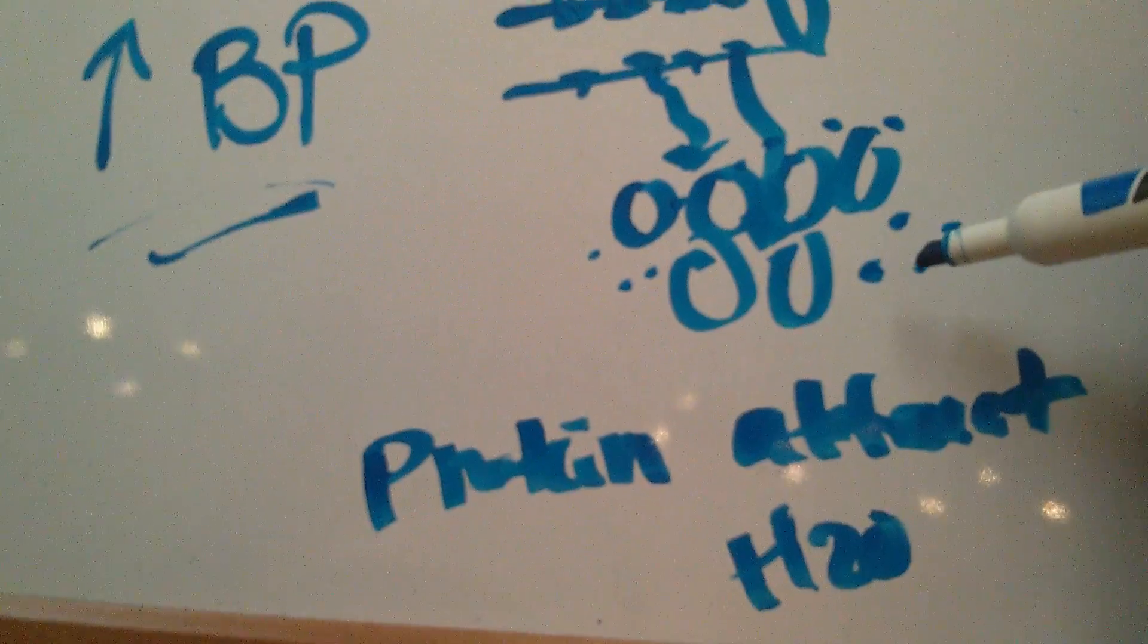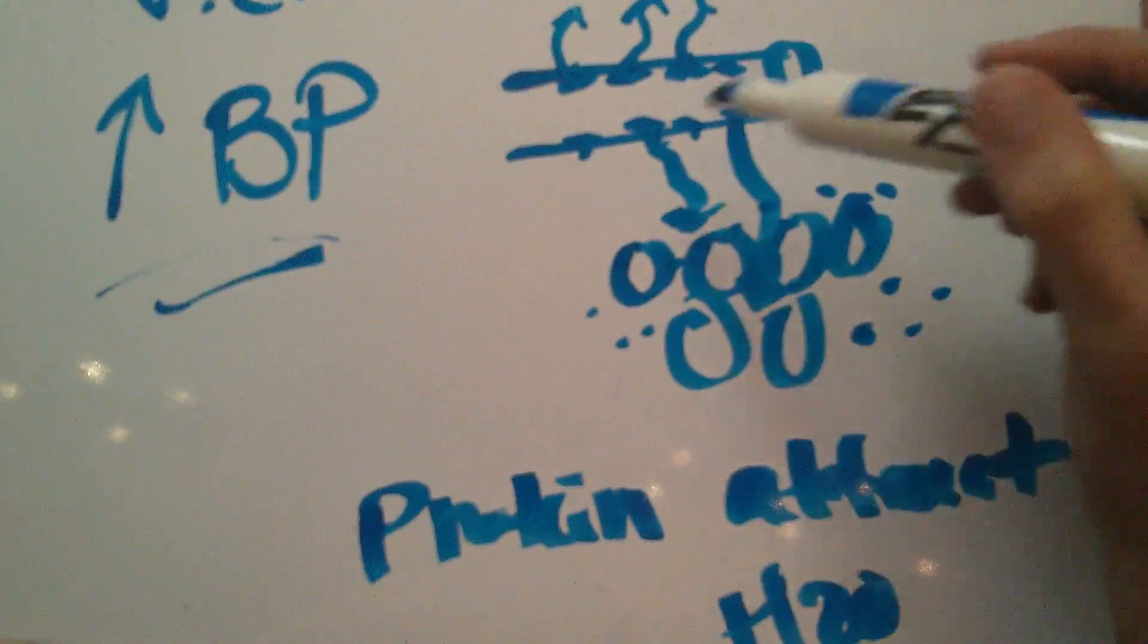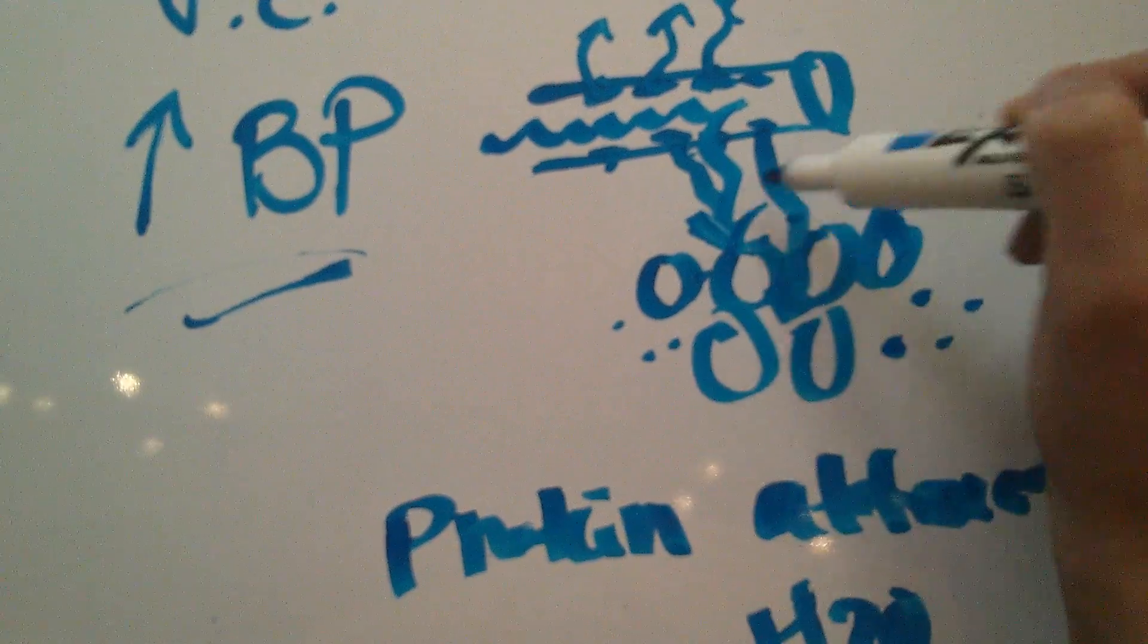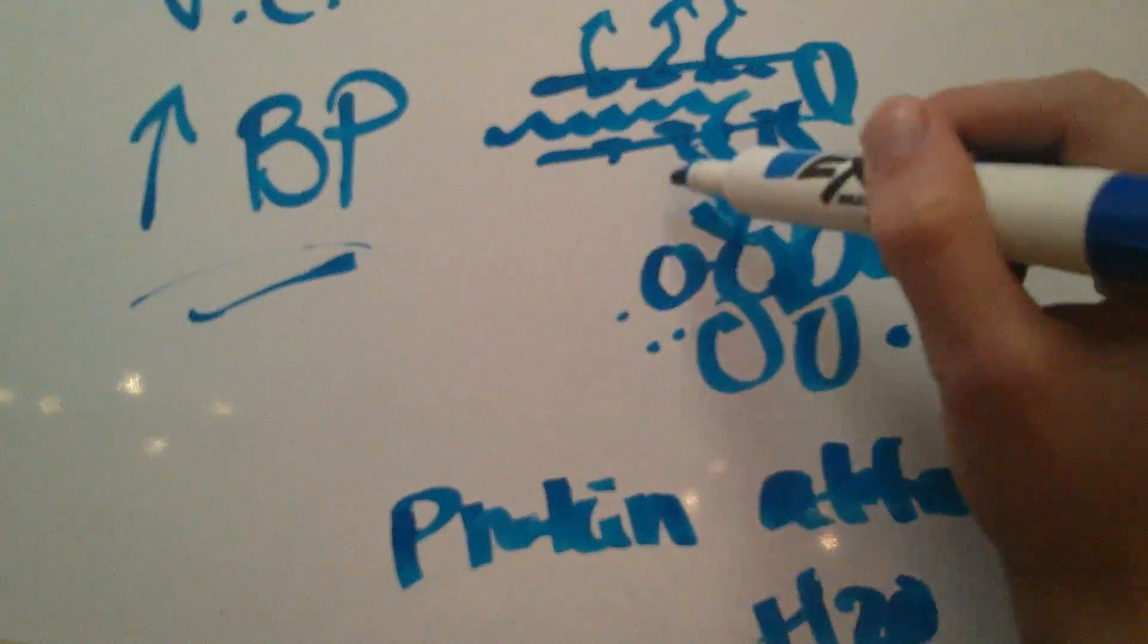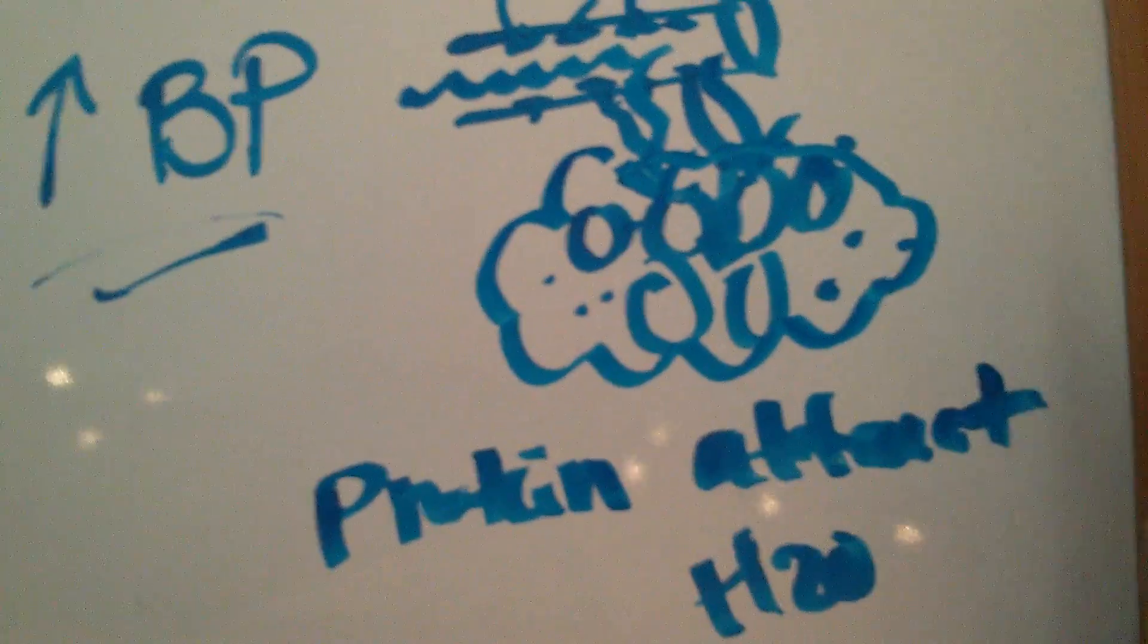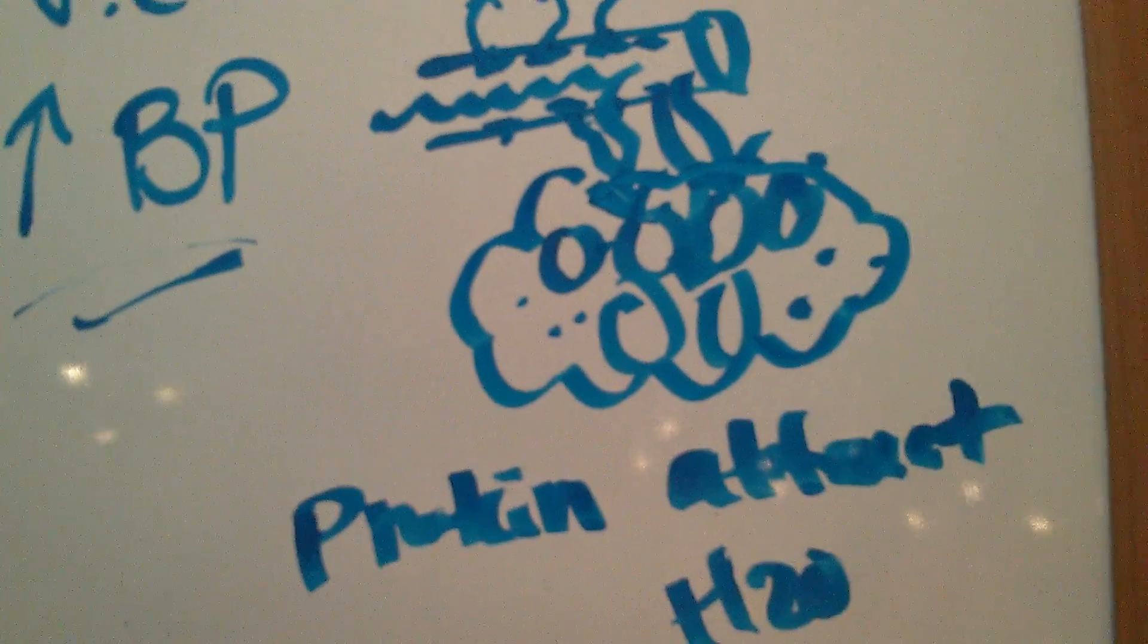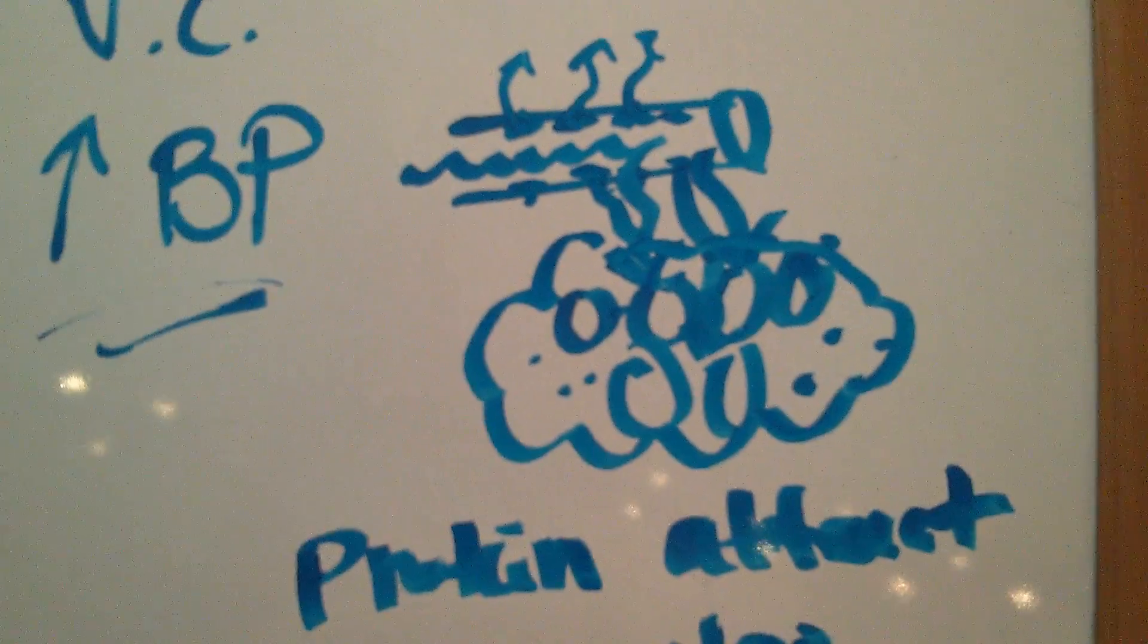Now this protein, the fibronectin, is going to attract water. So all the water from inside the vessels is going to want to come out as well, diffuse across, and start collecting in the cellular area, which is going to cause the edema, which is the swelling of the tissues.